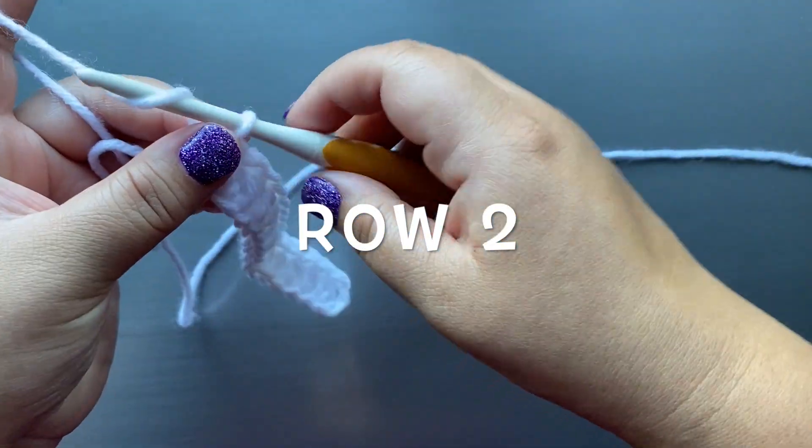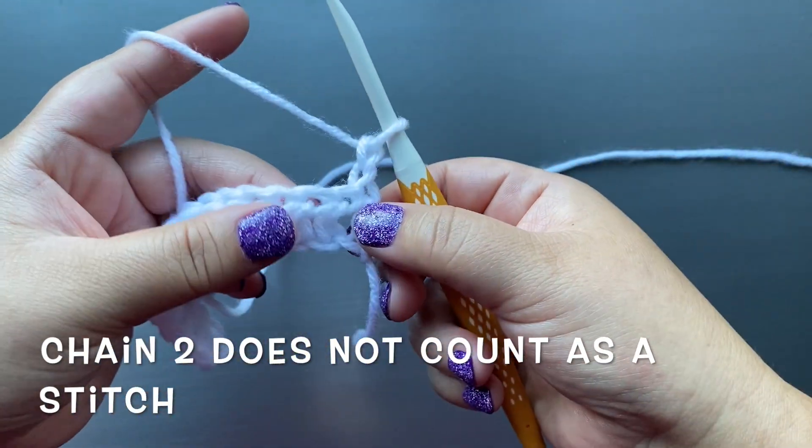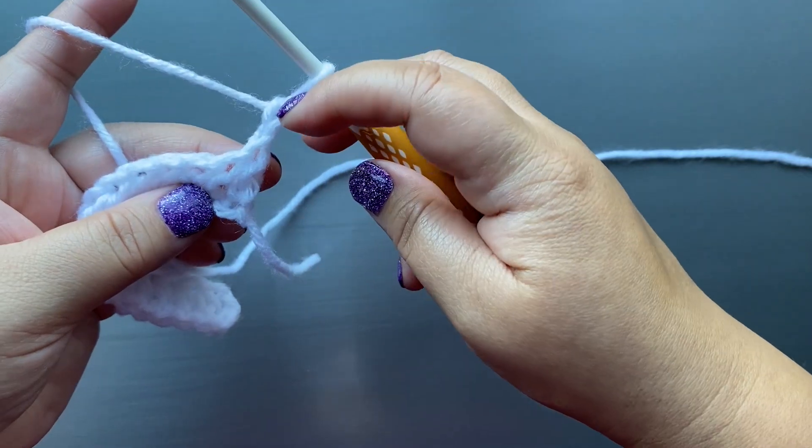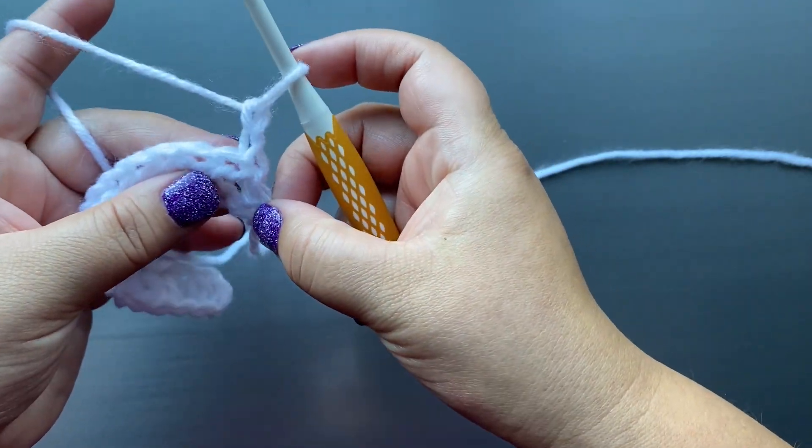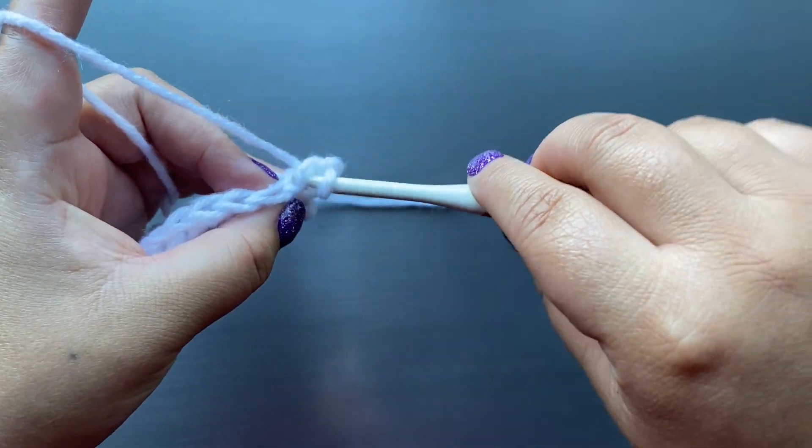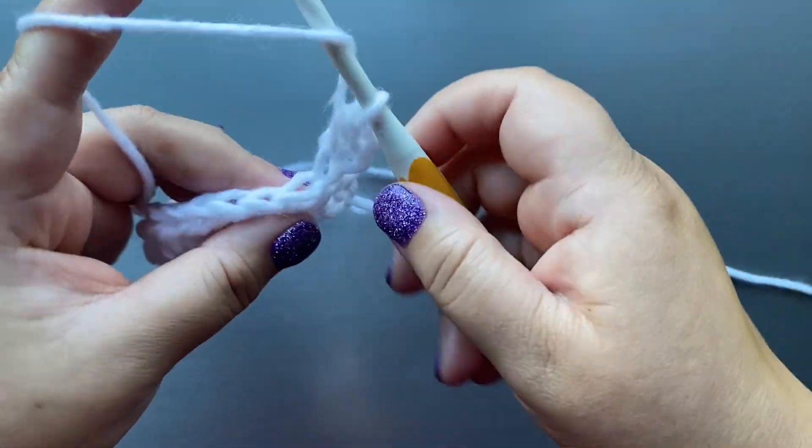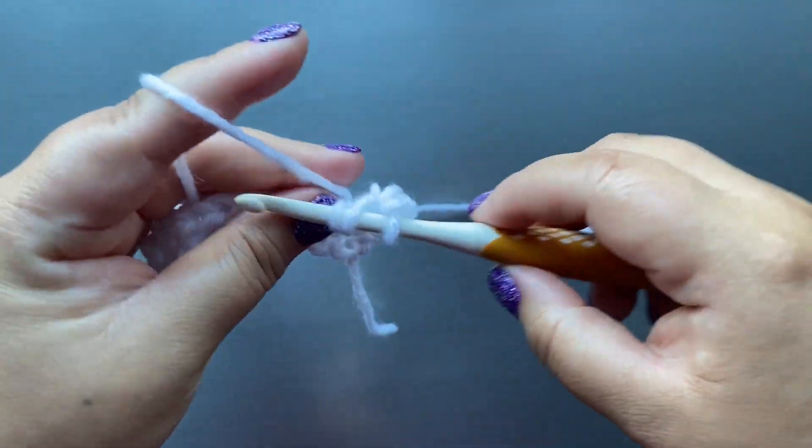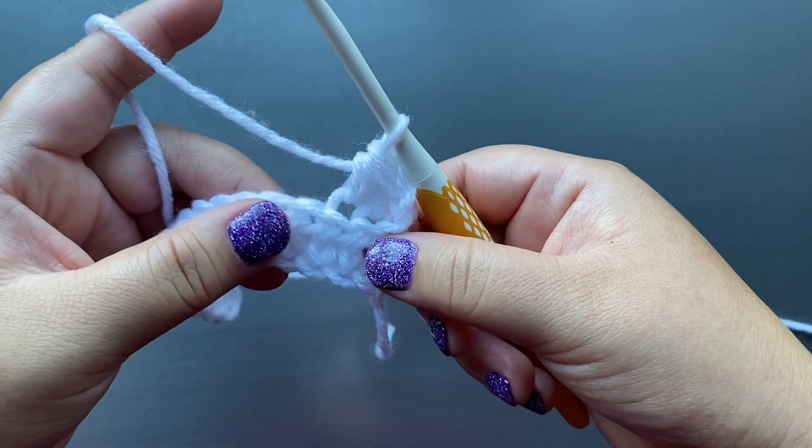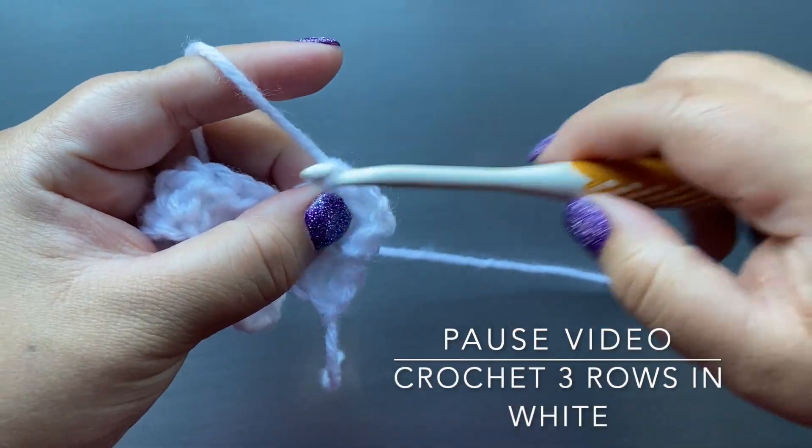Row two. Chain two and turn your work around. Chain two does not count as a stitch. We are going to only half double crochet into the back loops. Continue to crochet until we have a total of three rows in the white. Go ahead and pause your video and meet me back here for the next color change.